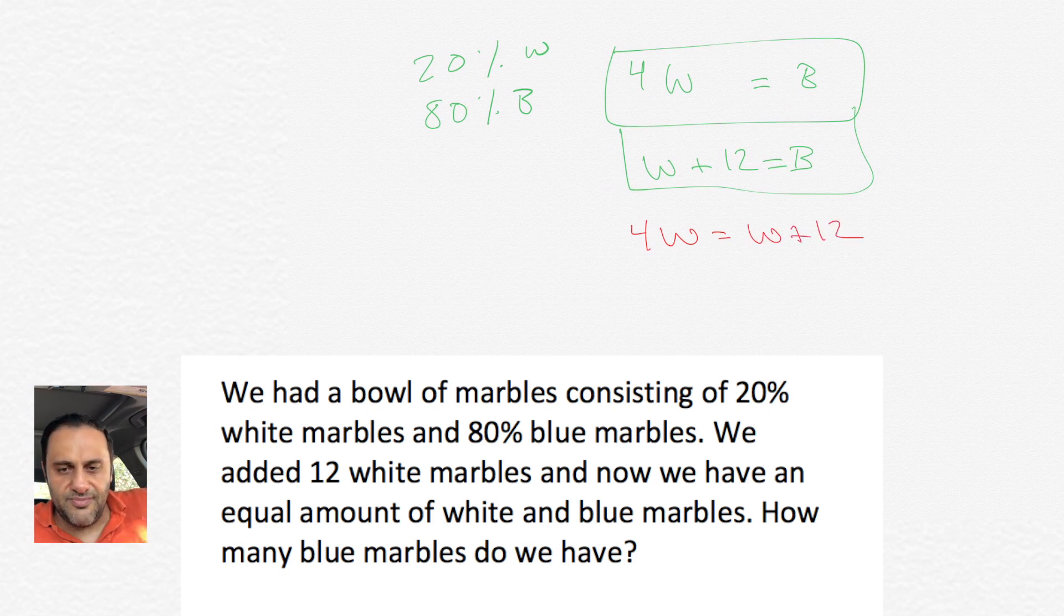I would do here is I would substitute, and because we have both equations equal to B, then it makes it even easier to substitute. So we have 4W equals B and W plus 12 equals B, so we could just set those two equal to each other. We would get 4W equals 12 plus W, or W plus 12.